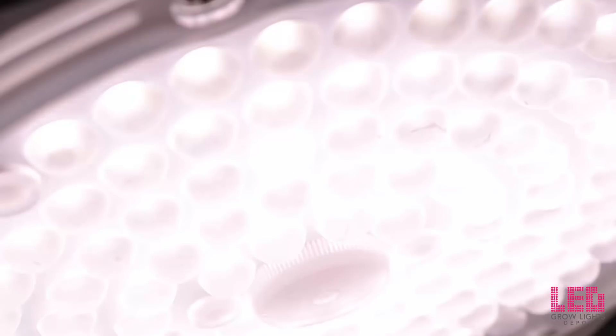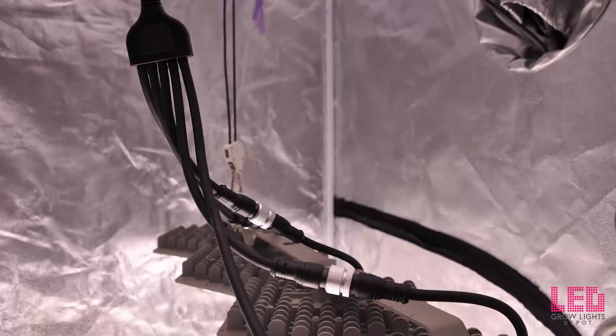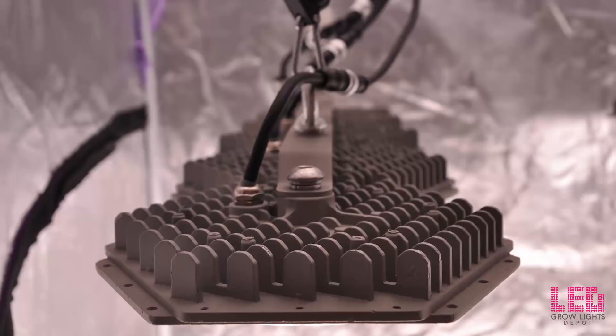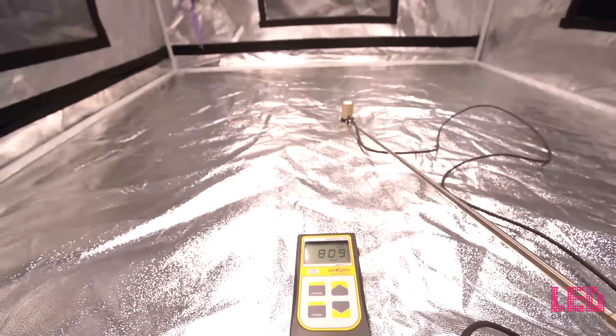I tested the PPFD of this fixture in a four foot by four foot grow tent. Keep in mind that the reflective nature of this tent could increase PPFD readings everywhere, especially in the corners and the edges. So let's check those readings out now. Our first reading is going to be in the center.